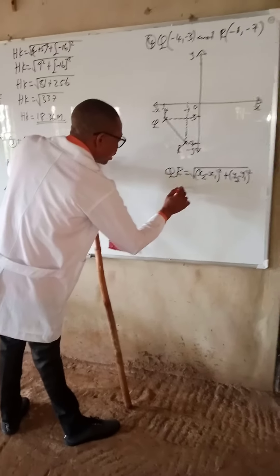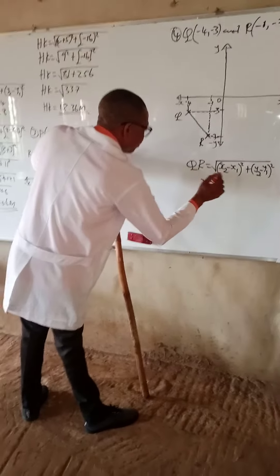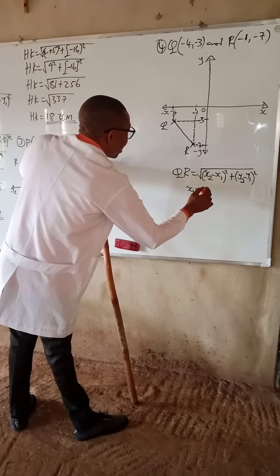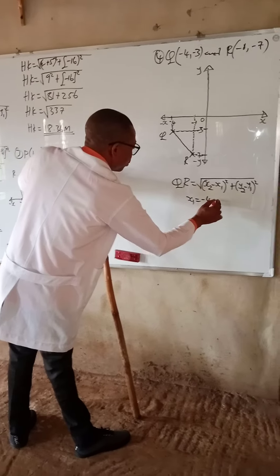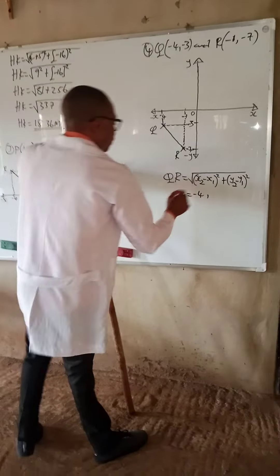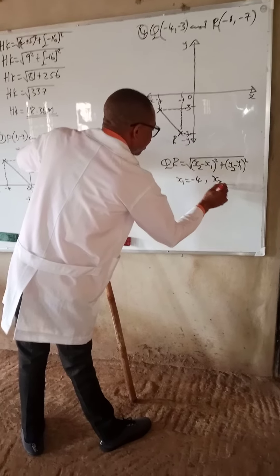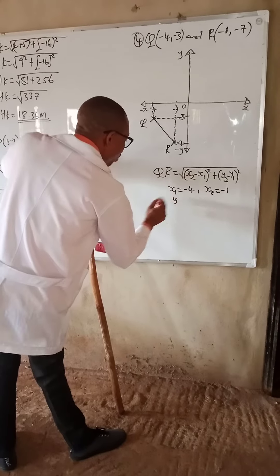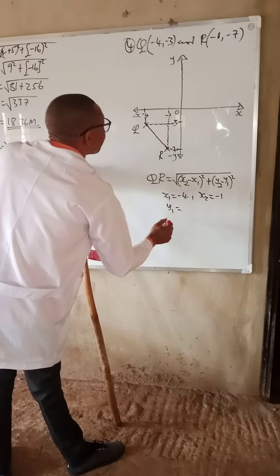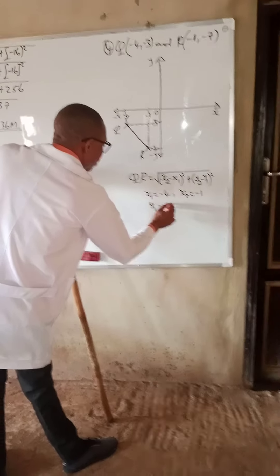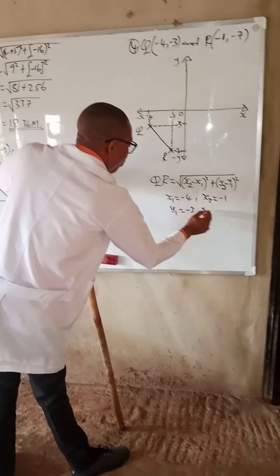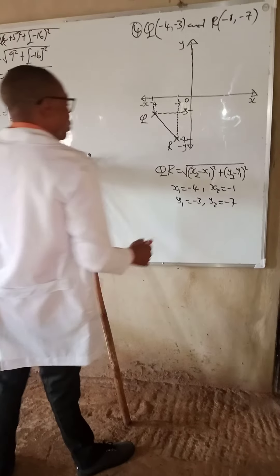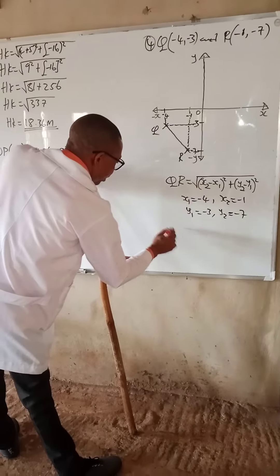We write down the parameters. x1 is minus 4, x2 is minus 1, y1 is minus 3, and y2 is minus 7. We now substitute these values back into the formula.